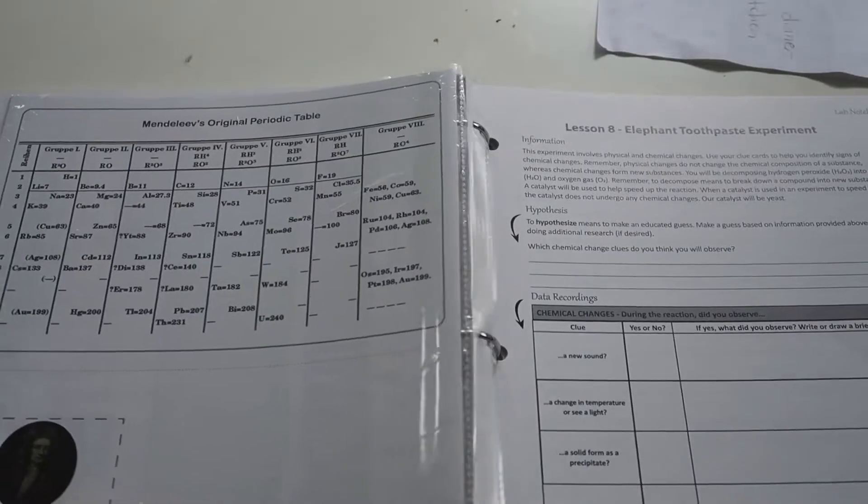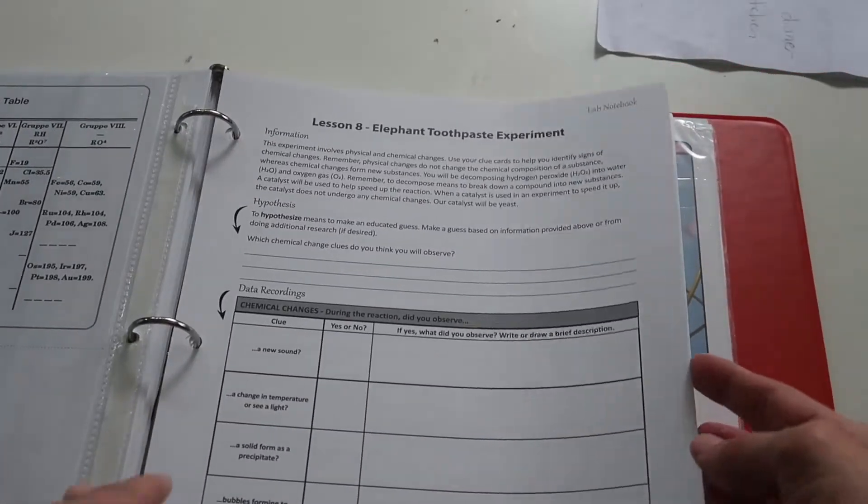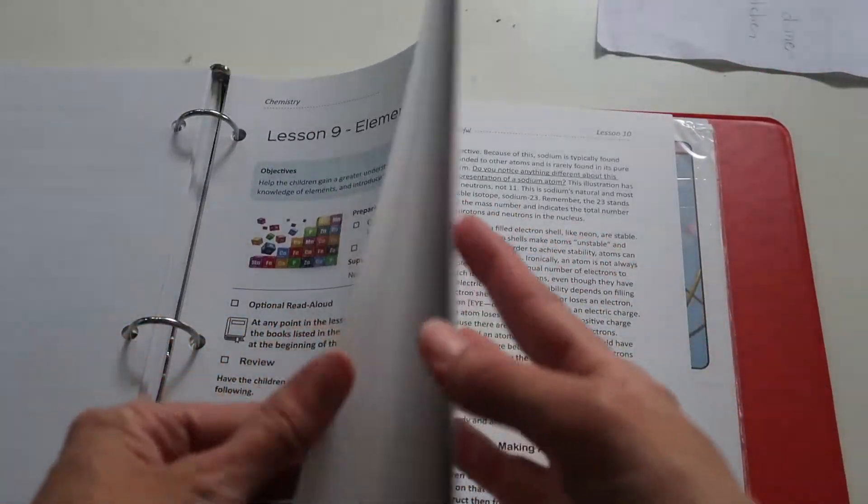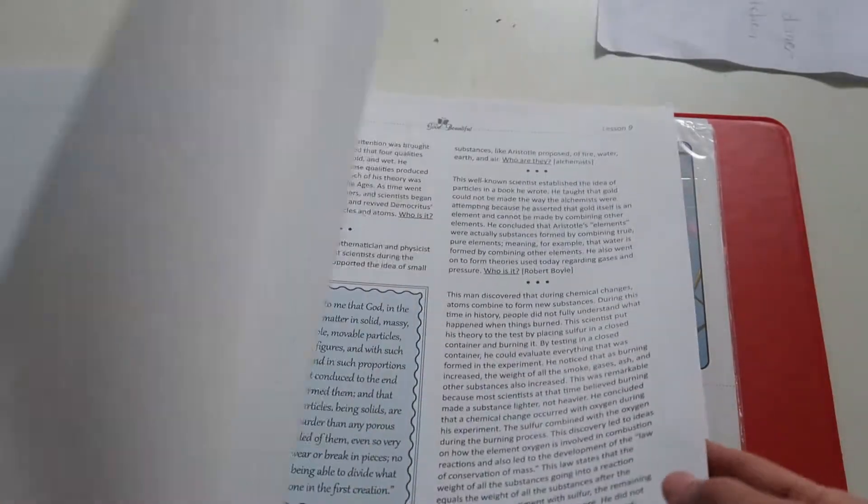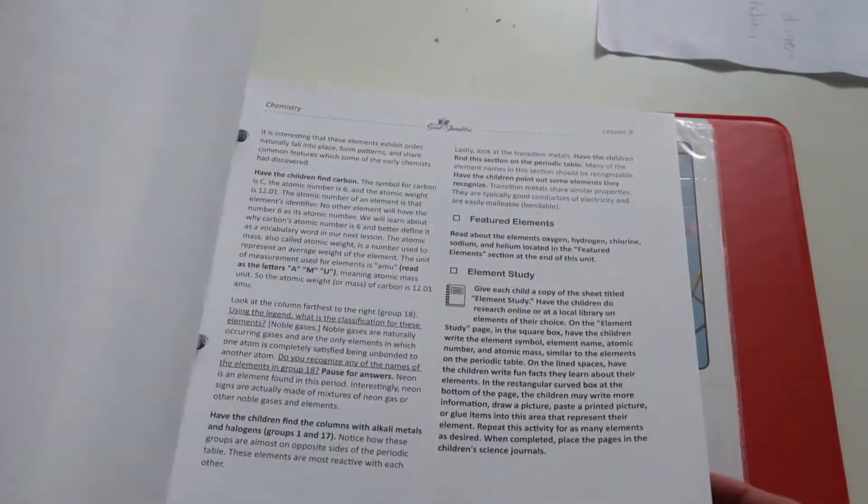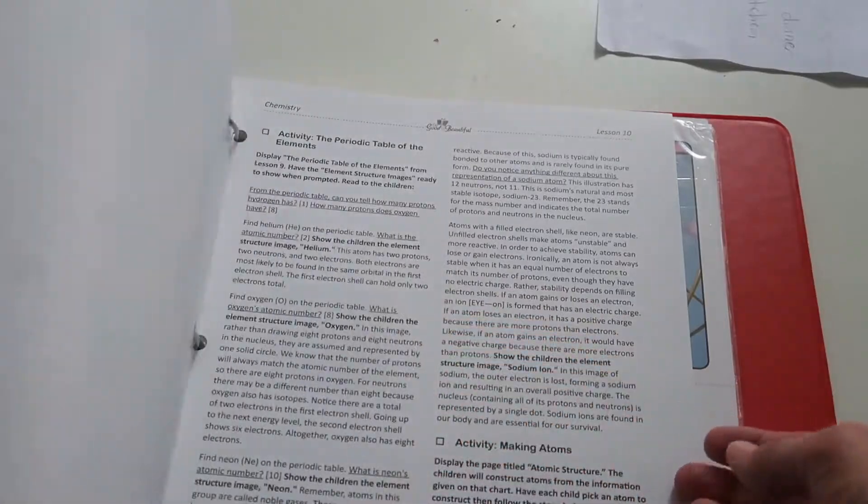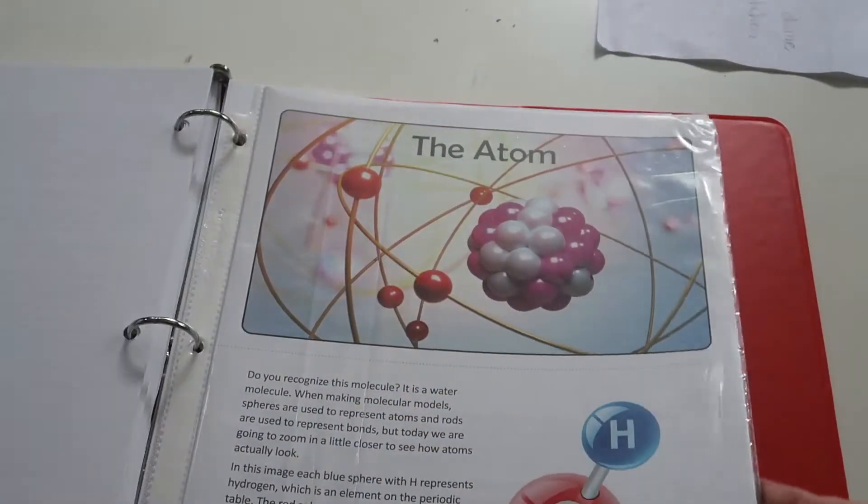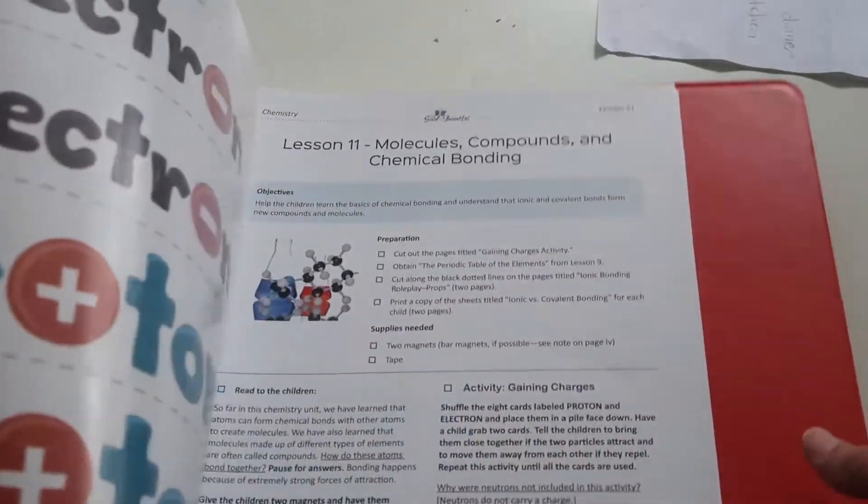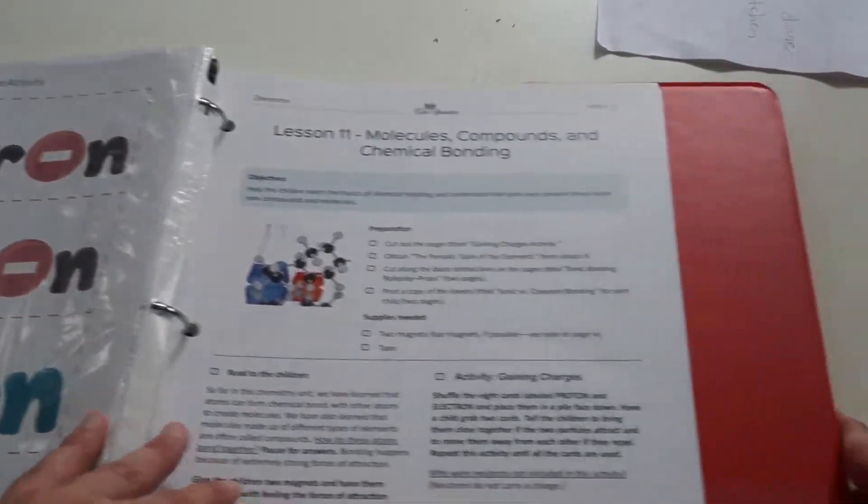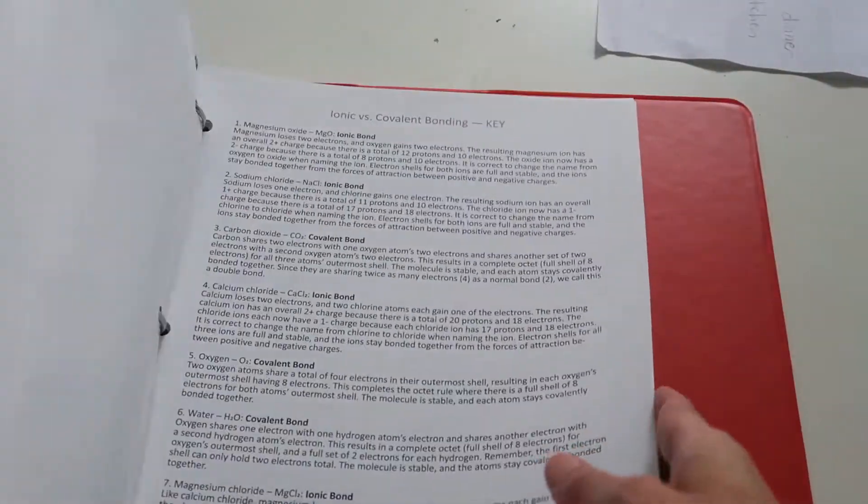Okay, observing density. Calculating volume and density. You have a little bit of math in there. Another mini book. Periodic table. Elephant toothpaste experiment. Learning about the periodic table. Usborne has a great periodic table book that compare along well with this. More cutouts and things like that.